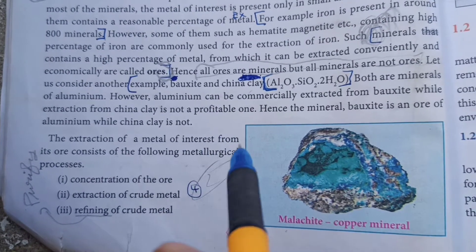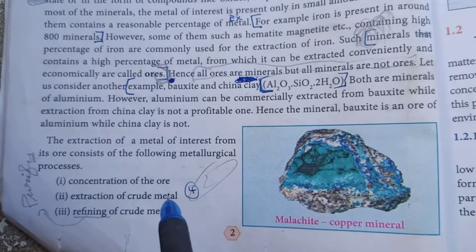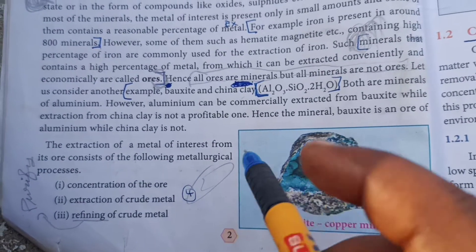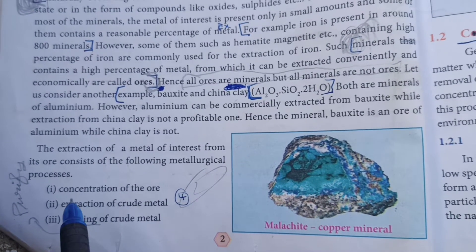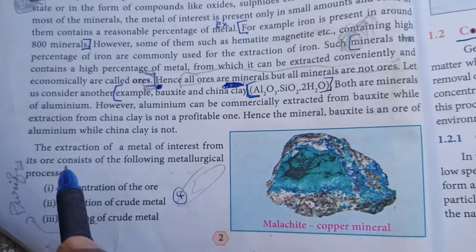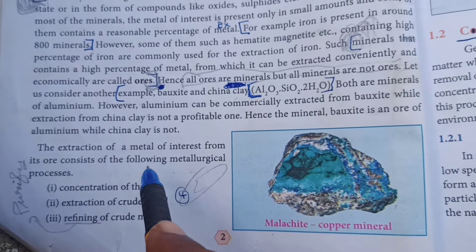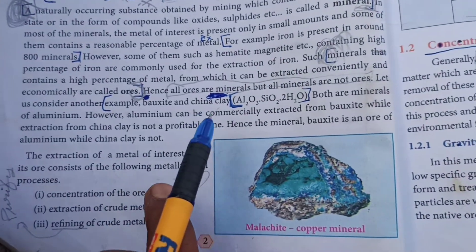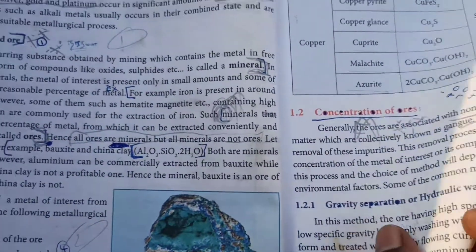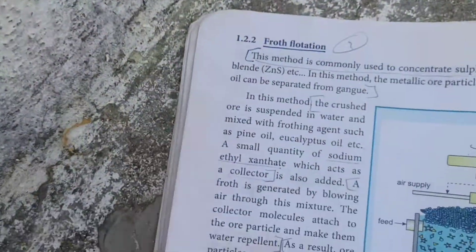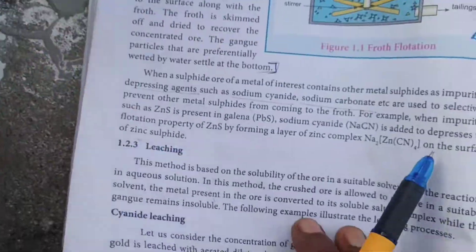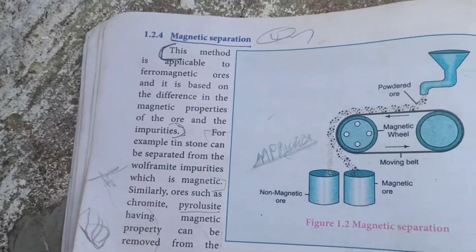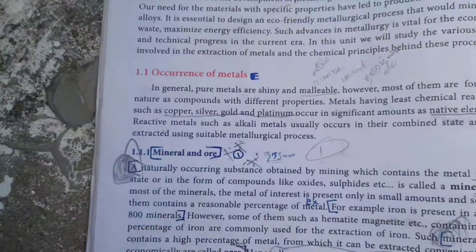We are going to talk about the concentration of the ore. The methods include gravity separation, froth flotation, leaching, and magnetic separation.